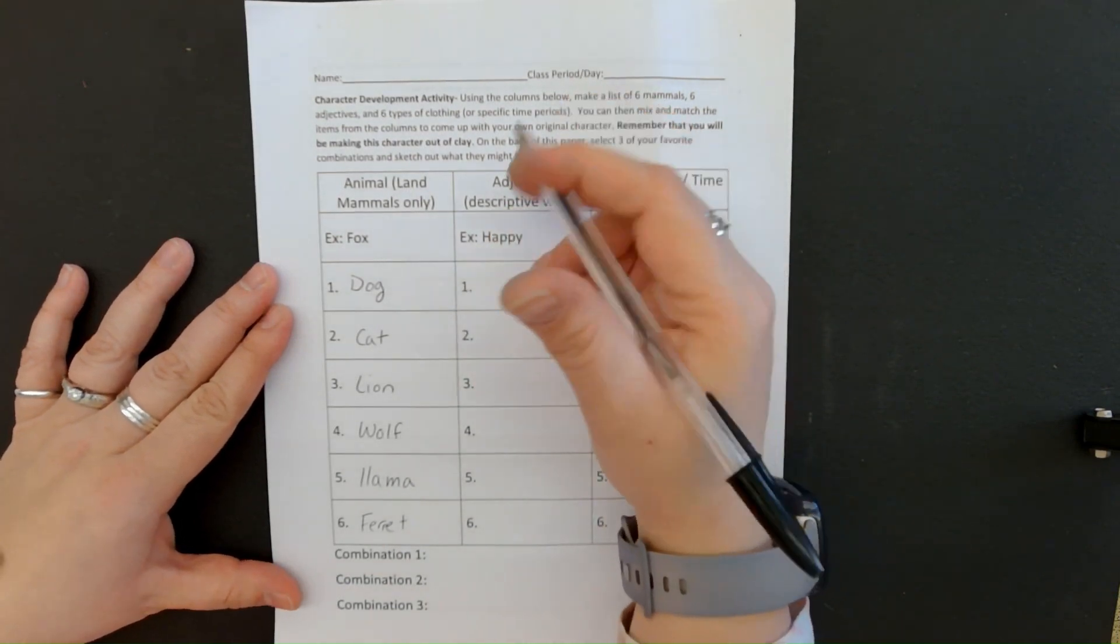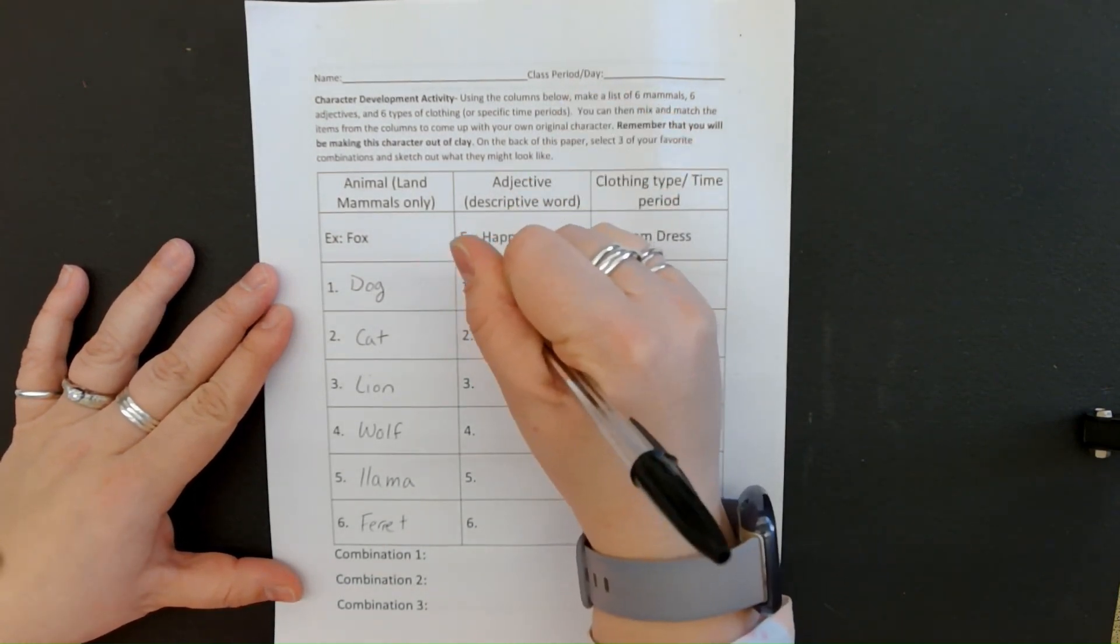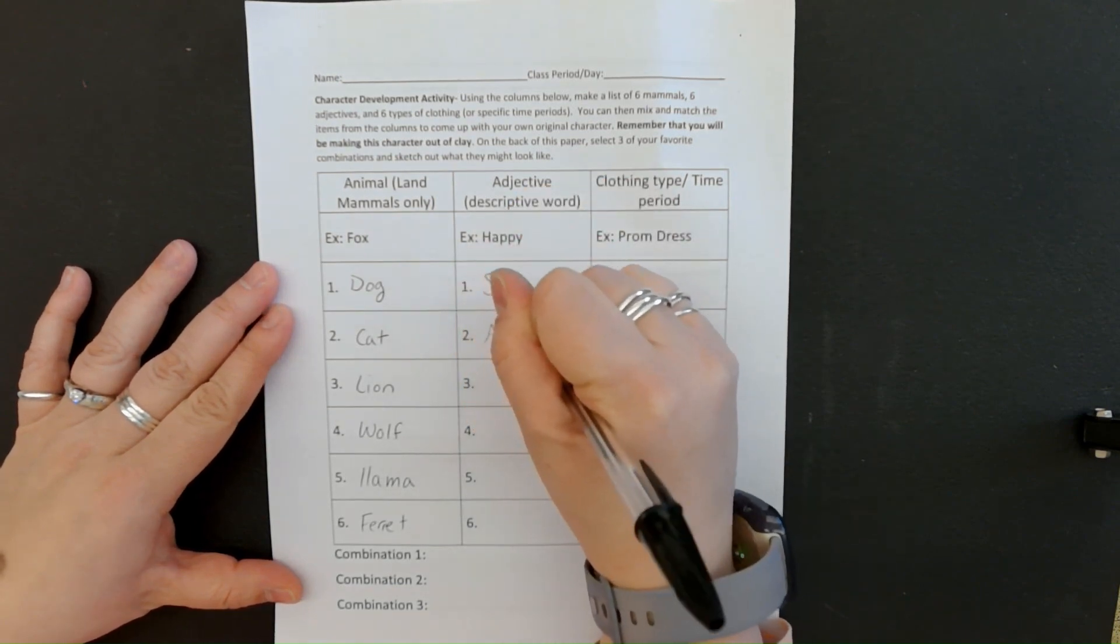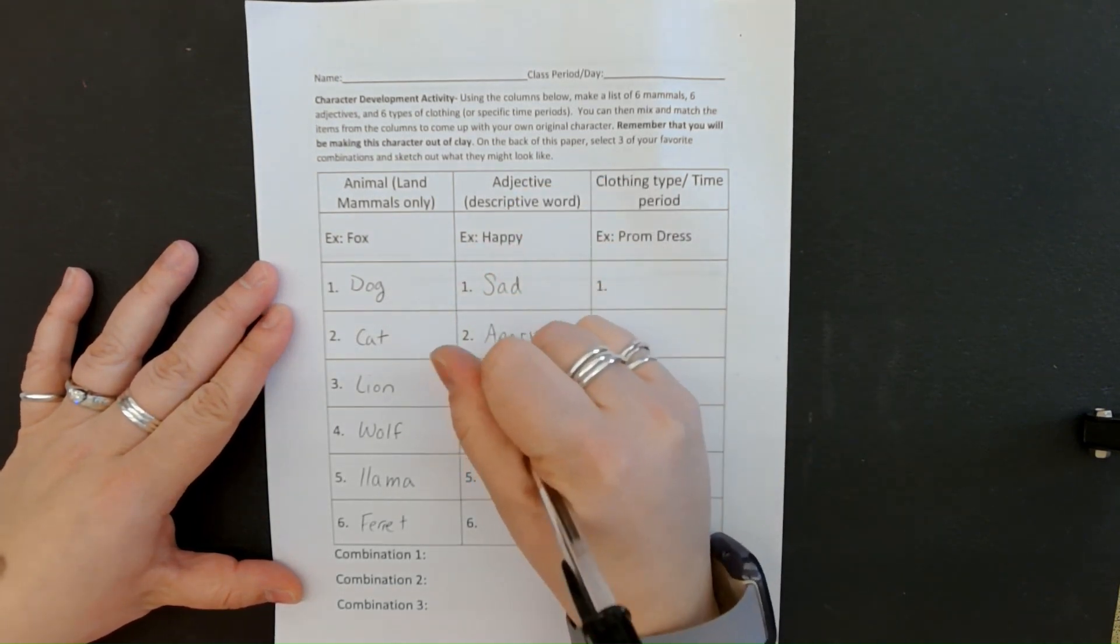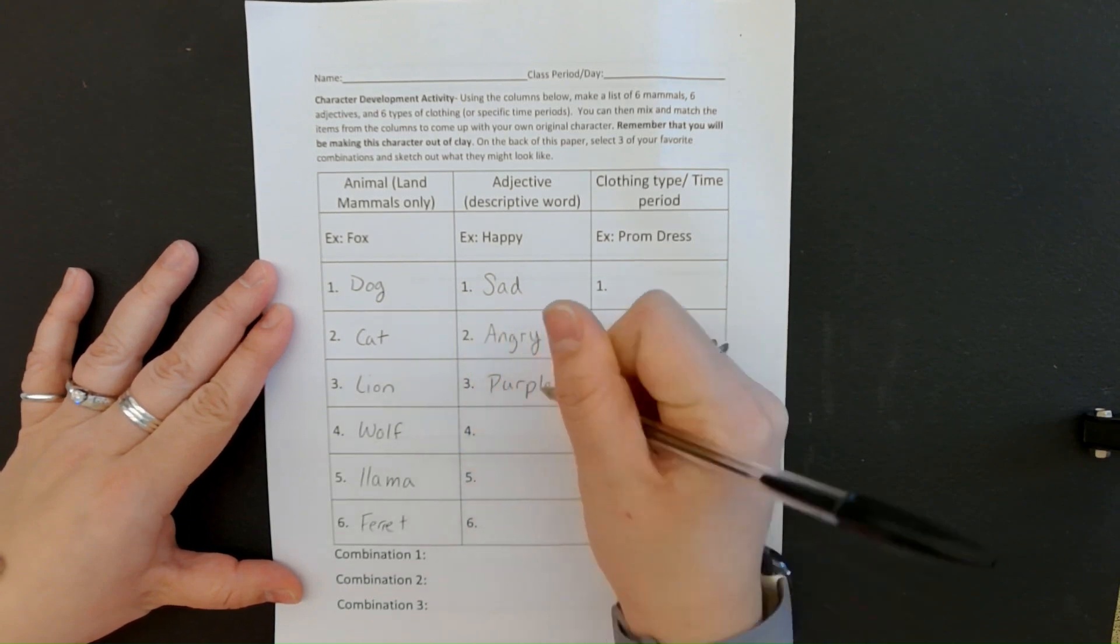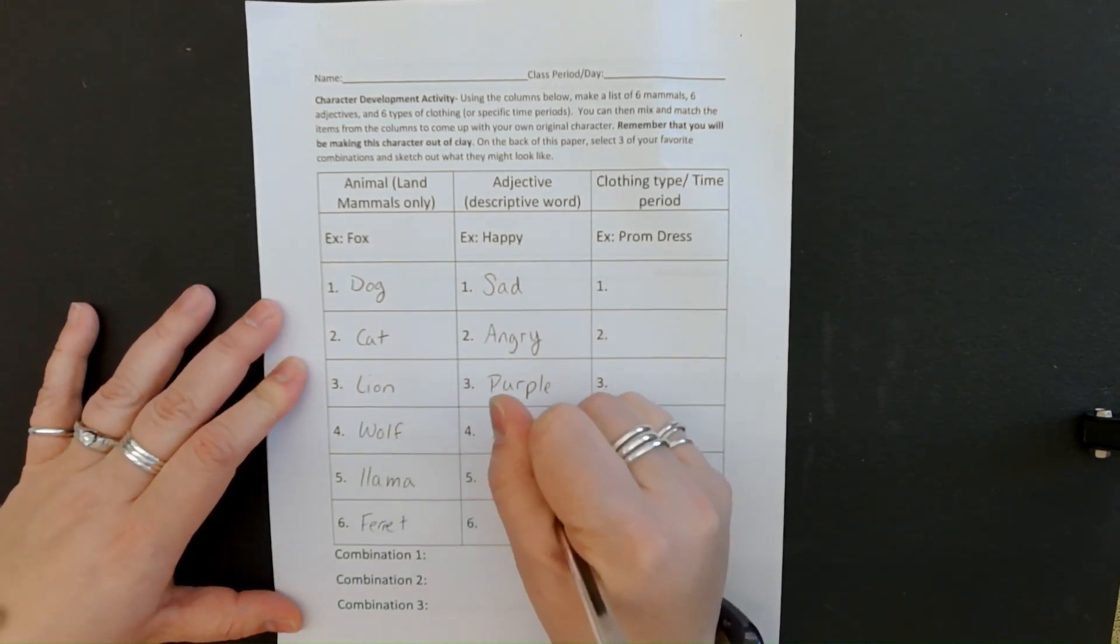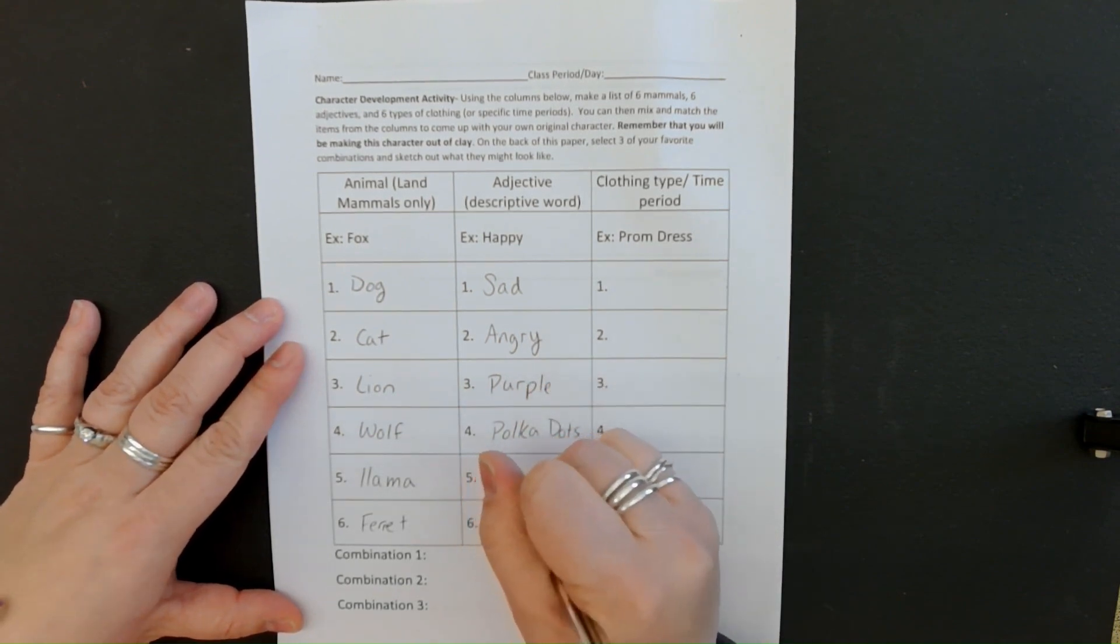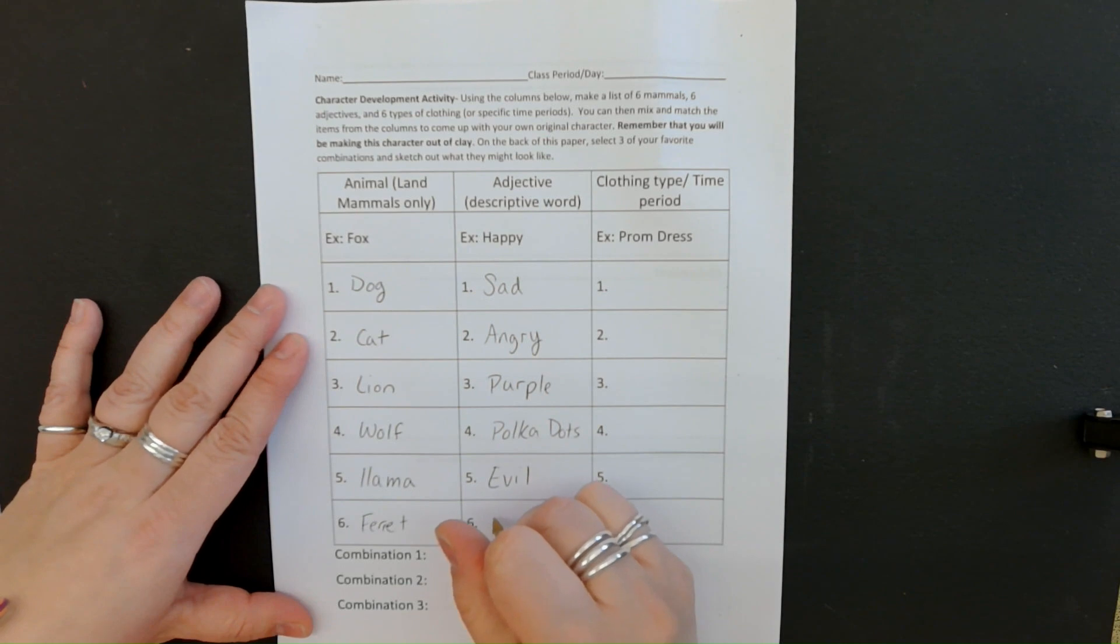So emotions are good, colors are good, patterns are good. So I'm going to go sad, angry, purple. Color could be an adjective. Polka dots, evil. I think I could probably show evil. And curly.